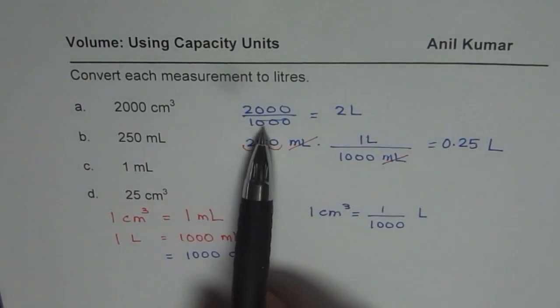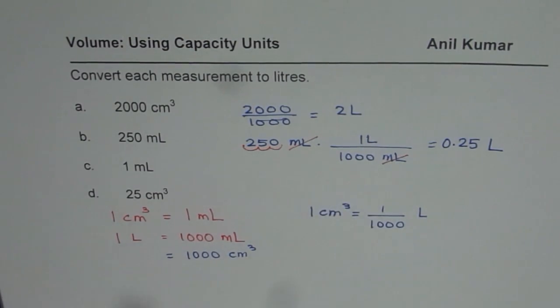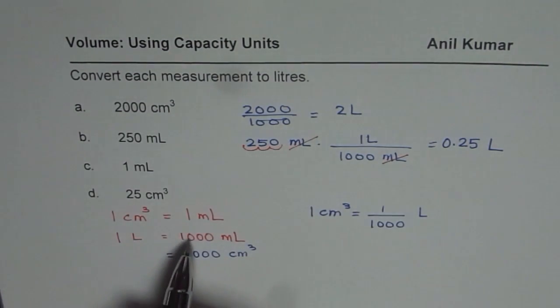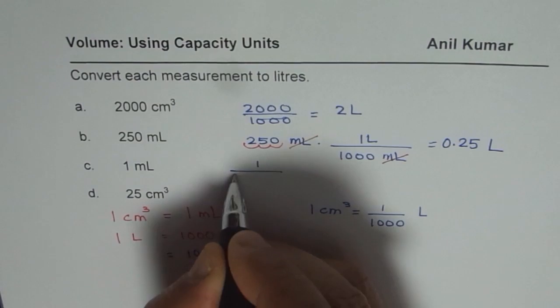One milliliter we know is one over thousand liters. We know one liter is thousand milliliters, therefore one milliliter is one over thousand liters.